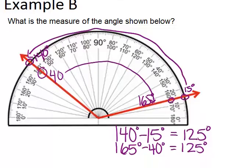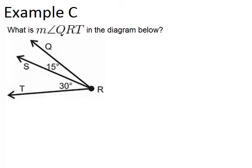Let's look at example C. It asks, what is the measure of angle QRT in the diagram below? QRT, if we follow the letters around, is this big angle, so we need the measure of this full angle.